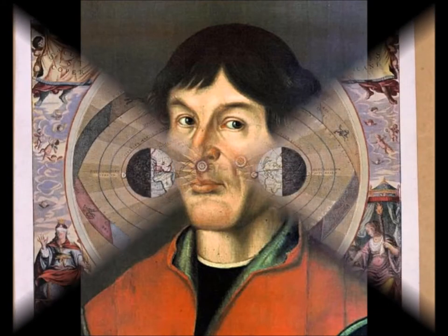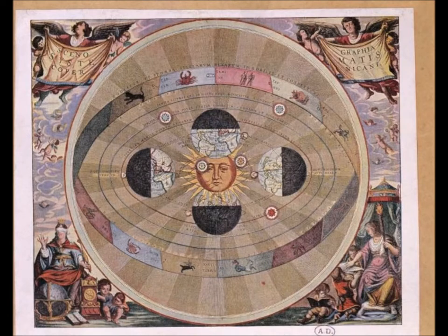We have just seen that the idea of the center of the world was not accepted without reticence. Copernicus did not question this foundation of Aristotle's system. But, for Copernicus the center of the world, it is the sun. What is Copernicus's justification?